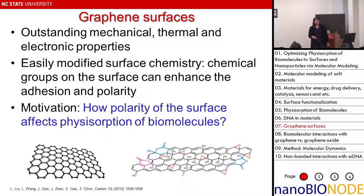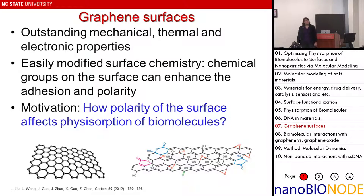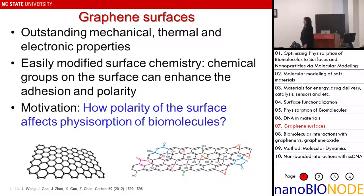We can modify the surface chemistry. It is known that once you oxidize the graphene surface, you form epoxy groups and hydroxyl groups — a combination that changes its polarity. Technically, we can go from full graphene all the way to 20-30% graphene oxide. After this, the structure no longer resembles a flat surface — it starts to crumble and shows inconsistent performance. Using surfaces going from graphene to 20% graphene oxide, we study how polarity affects physisorption of biomolecules.